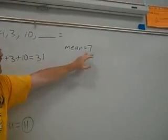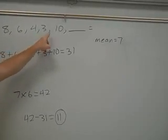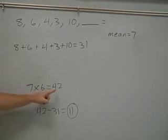So what we do is 7, because the mean is 7, and there will be 6 numbers in the sequence when we have them all. So we do 7 times 6 equals 42.